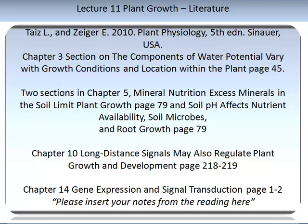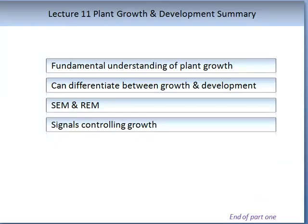There is associated literature I would like you to read with this topic. From the recommended textbook Taiz and Zeiger Plant Physiology, 5th edition: Chapter 3, on components of water potential that vary with growth conditions and location (page 45); Chapter 5, on mineral nutrition — excess minerals in the soil limit plant growth (page 79) and soil pH affects nutrient availability, soil microbes and root growth (page 79); Chapter 10, Long Distance Signals May Also Regulate Plant Growth and Development (pages 218–219); and Chapter 4 on Gene Expression and Signal Transduction (pages 1 and 2).